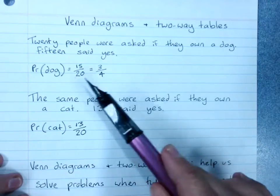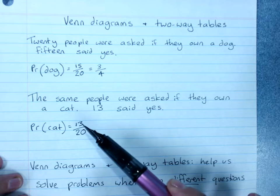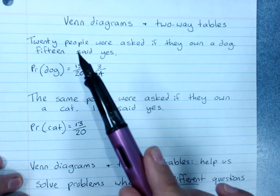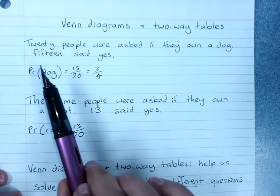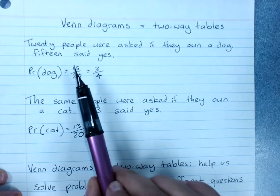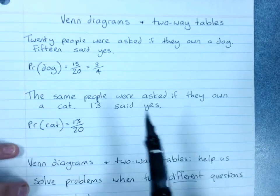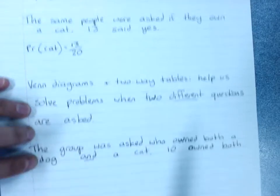Because obviously we've got a problem here. Fifteen people said that they own a dog and thirteen people said they own a cat. Now that adds up to 28 and we've only got 20 people. So I'm sure you can see what's happened here. Because they just got asked, do you own a dog? And they said yes. Then they got asked, do you own a cat? 13 people said yes. Obviously some people said yes to both because they've got both a dog and a cat.